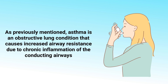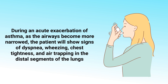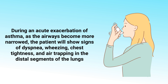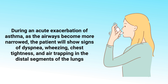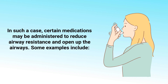During an acute exacerbation of asthma, as the airways become more narrowed, the patient will show signs of dyspnea, wheezing, chest tightness, and air trapping in the distal segments of the lungs.